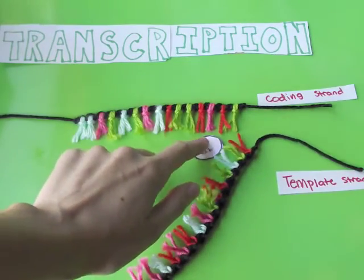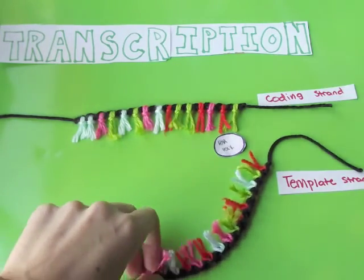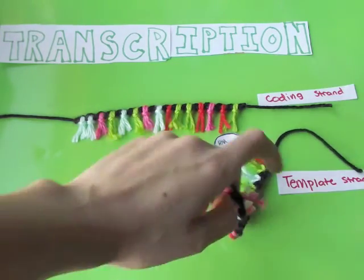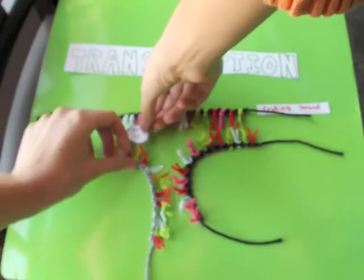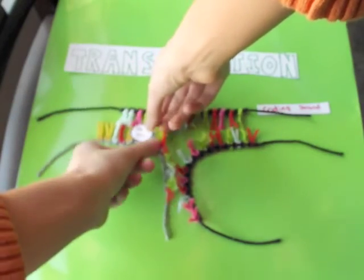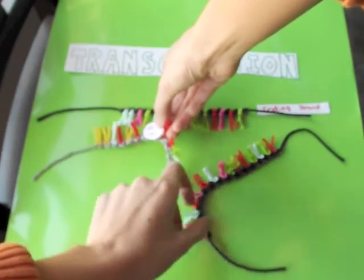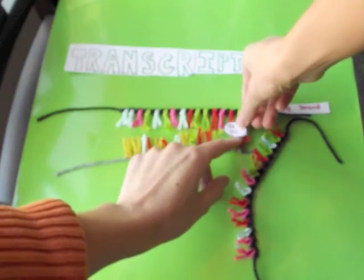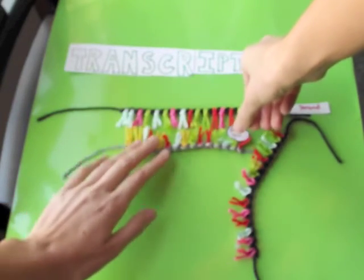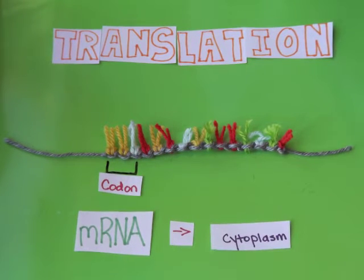First, the DNA molecule is broken apart by RNA polymerase. As the template strand is zipped away, RNA nucleotides find complementary bases on the coding DNA strand. Each DNA triplet corresponds to a sequence of three nucleotides of mRNA, called a codon. After a complete mRNA strand is assembled, it detaches and exits through a nuclear pore into the cytoplasm where translation will occur.